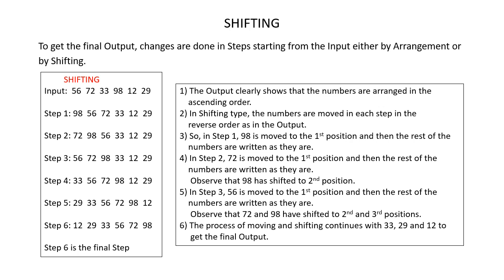In step 4, 33 is moved to the first position; observe that 56, 72 and 98 are shifted to the second, third and fourth positions. In step 5, 29 is moved to the first position; observe that 29, 33, 56, 72 and 98 are shifted to the second, third, fourth and fifth positions. In step 6, 12 is moved to the first position; observe that 29, 33, 56, 72 and 98 are shifted to the second, third, fourth, fifth and sixth positions to get the final output.